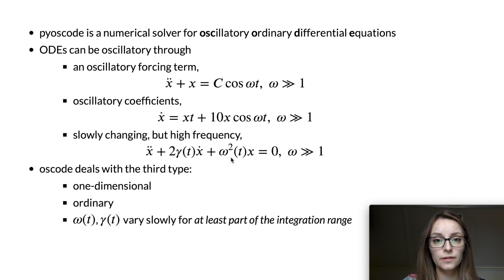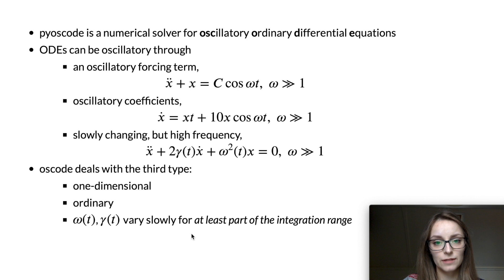Pyoscode was designed to deal with this third type of equation: one-dimensional ordinary differential equations that take the specific form of a harmonic oscillator with a time-dependent frequency and damping term, with the frequency and potential damping terms varying slowly — meaning on a timescale much larger than the timescale on which the solution varies.